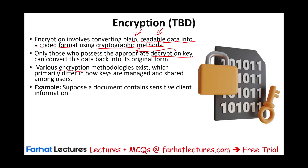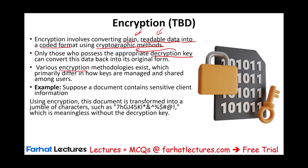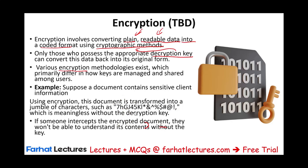For example, consider a document containing sensitive client information. Using encryption, the document is transferred into jumbled characters — meaningless without the decryption key. Behind every letter and number there is the true meaning, but all you see is something like '7h gj45ki'. If you know the key — for example, 7 stands for A, H stands for L, G stands for K, and so on — you can decrypt it. If someone intercepts this information, they see only letters and numbers that don't mean anything. They need the decryption key to decrypt it. This is the basic idea behind encryption.